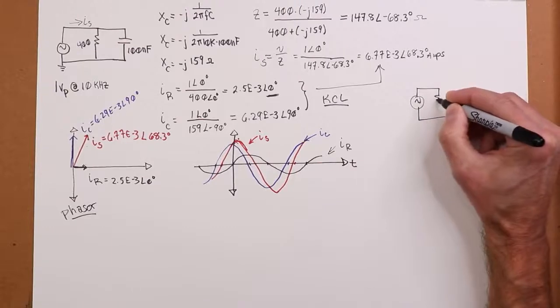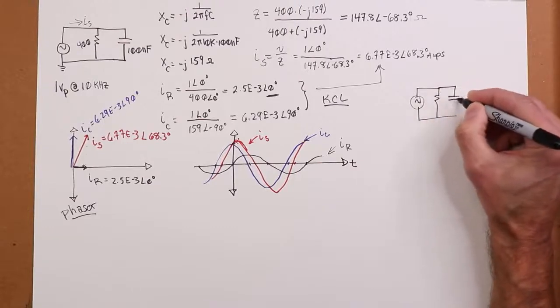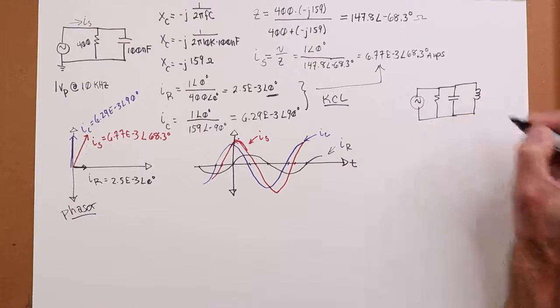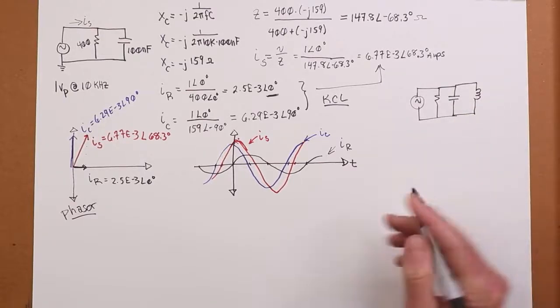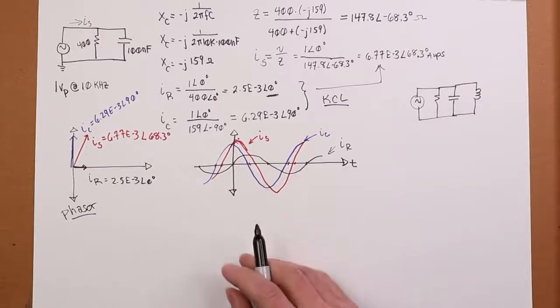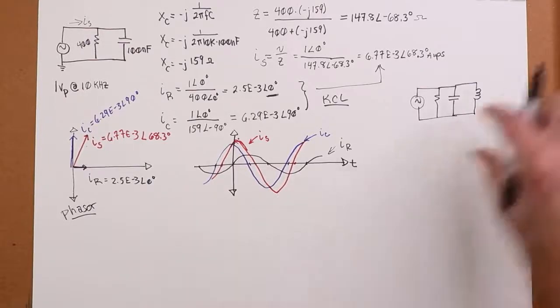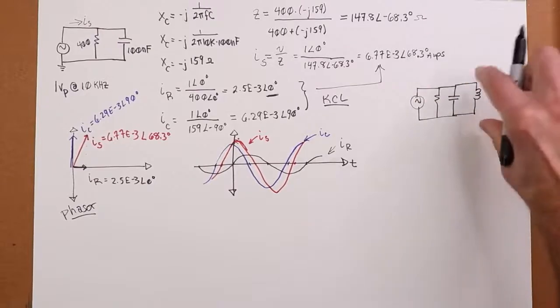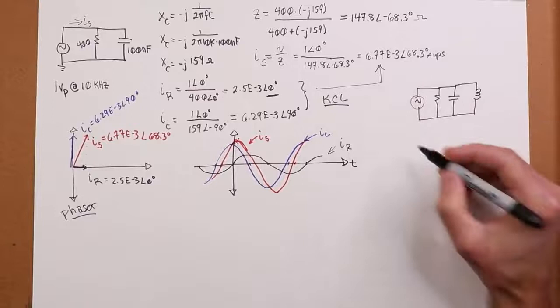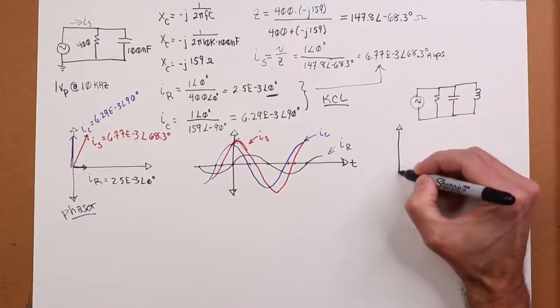In other words, we have something like this. Well, similar sort of thing that we saw in the series case. Obviously we have a new path for current flow, but as far as the phasor diagram is going to be concerned, again, they're all going to have the same voltage, we're just going to see a 90 degree in the opposite direction for IL. In other words,